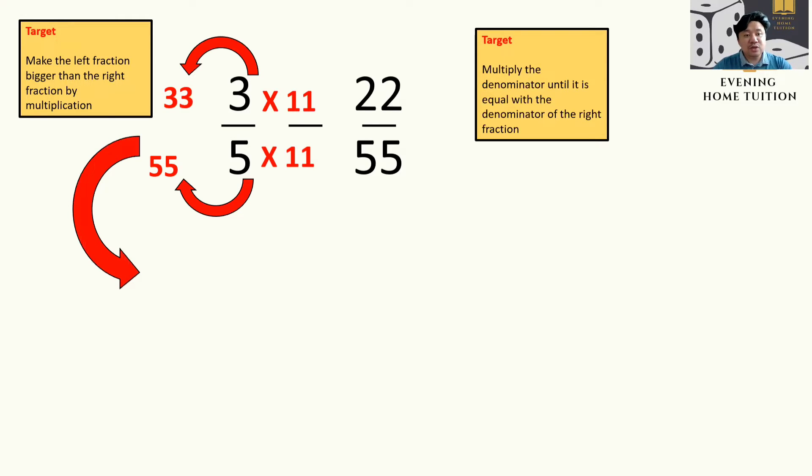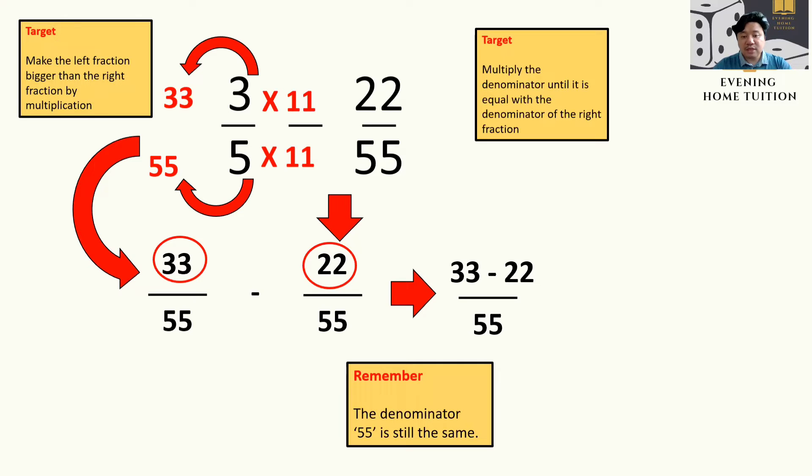So you bring down 33 over 55. 33 over 55 minus 22 over 55, and if you minus it, you will get 11 over 55. Make sure that the denominator is the same. 11 and 55, you can reduce its value by 11. So 11 divided by 11 will make it 1, and 55 divided by 11 equal to 5. So the answer is 1 over 5.